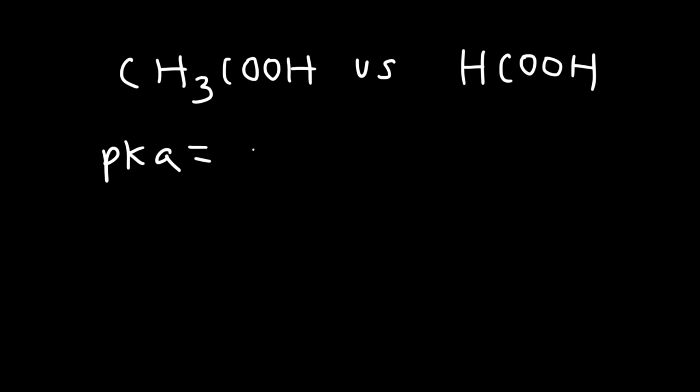In this video we're going to talk about acid strength and how it relates to Ka and pKa. So here's a question for you: Let's say if we have two acids, acetic acid and formic acid, and you're given a pKa of each of these two acids. The pKa for acetic acid is 4.76 and the pKa of formic acid is 3.75. So which of these two acids is the stronger acid?